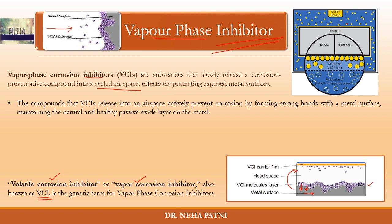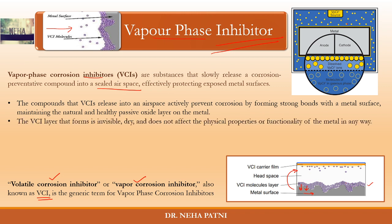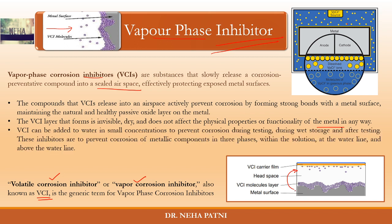A passive oxide layer is formed on the metal. The layer formed is invisible and dry, and it does not affect the physical properties of the metal in any way. That is especially important — when you apply VCI, you have a layer on the metal that is also not affecting the properties of the metal, so the metal remains as it is.